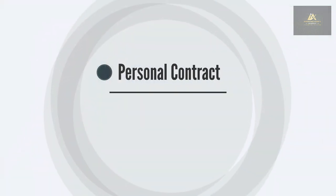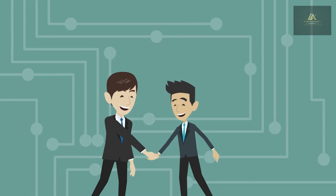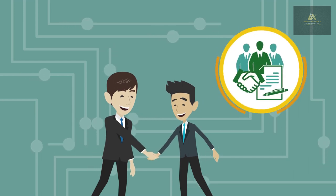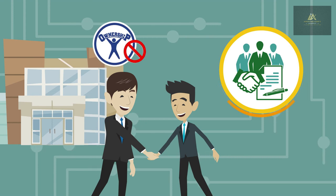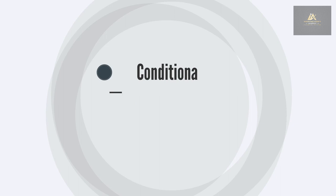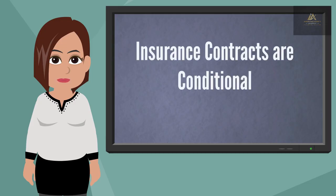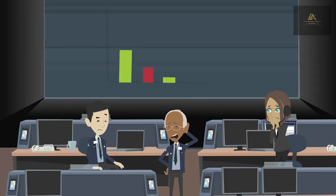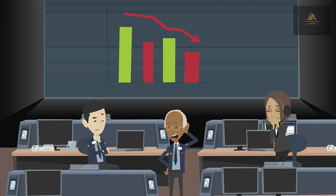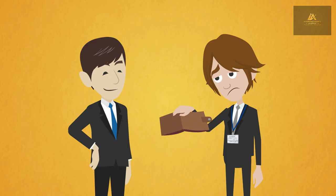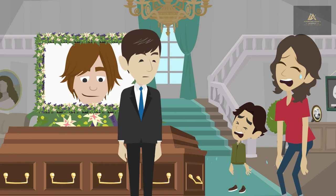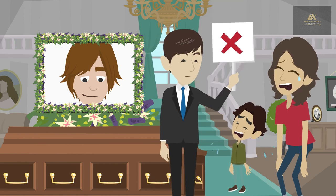Personal contract: insurance contracts are personal contracts between an individual and the insurance company and cannot transfer ownership without the insurance company's written consent. Conditional: insurance contracts are conditional because certain conditions must be met by all parties when a loss occurs, otherwise the contract would not be legally enforceable. For example, if the policy owner is past due on payments and the insured dies, the insurance company does not have to pay the death benefit because a condition was not met.